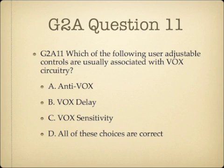Question 11. Which of the following user-adjustable controls are usually associated with VOX circuitry? A. Anti-VOX. B. VOX delay. C. VOX sensitivity. Or D. All of these choices are correct.